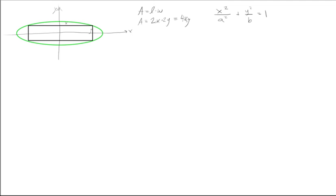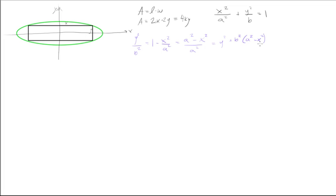We're going to get rid of the y's by rearranging the ellipse formula. Starting with the ellipse equation, we rearrange to get y²/b² = 1 − x²/a², which is also equal to (a² − x²)/a². Continuing, we get y² = b²(a² − x²)/a².